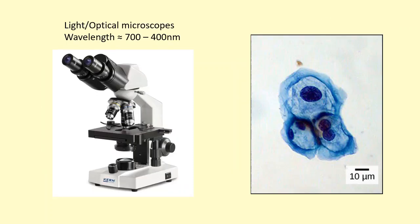This is an optical microscope like the ones you find in schools. They use light between wavelengths of 700 and 400 nanometers. Here's an image of a cell that you could see under a light microscope like this.